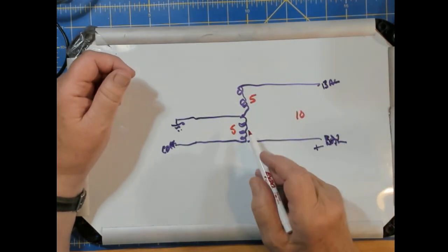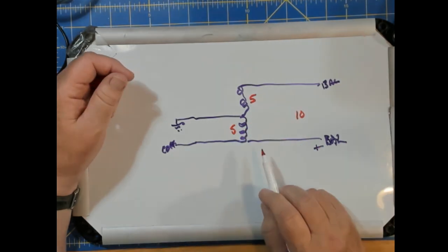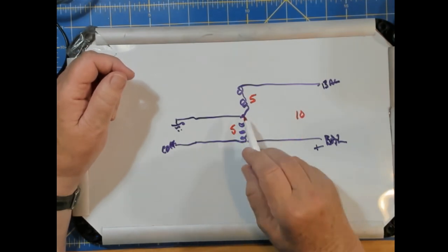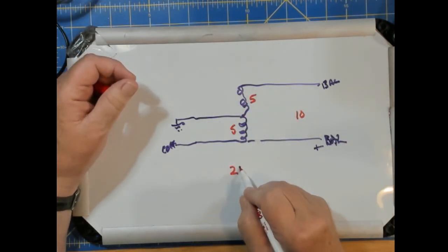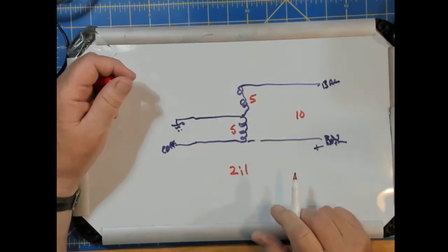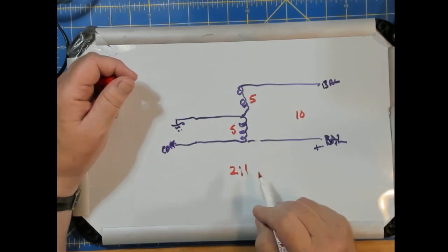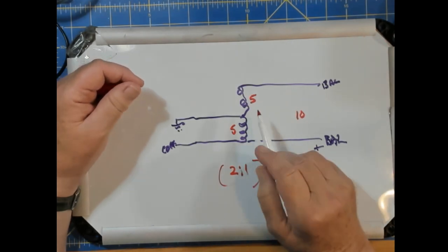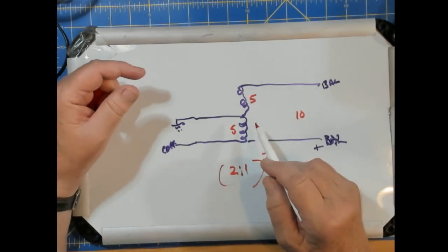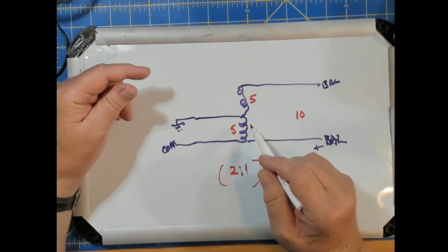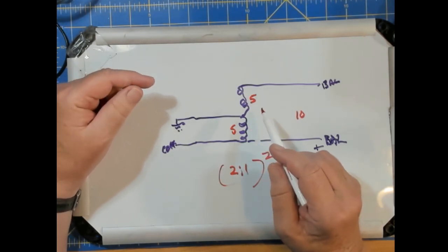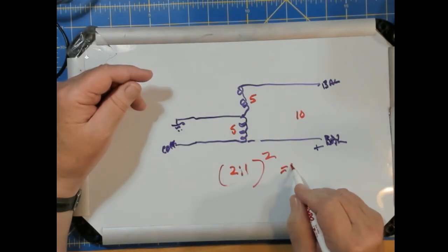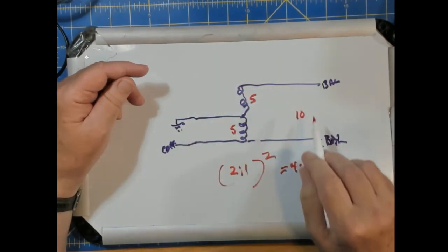Now, if you take the ratio of the baluns, it's 5 to 10. So it's 2 to 1. Now, to get the actual balun ratio, you've got to square this. It is a transformer. You have to take into account both current and voltage. So this is 2 to 1 squared is 4 to 1. This is a real common balun. You see them everywhere.